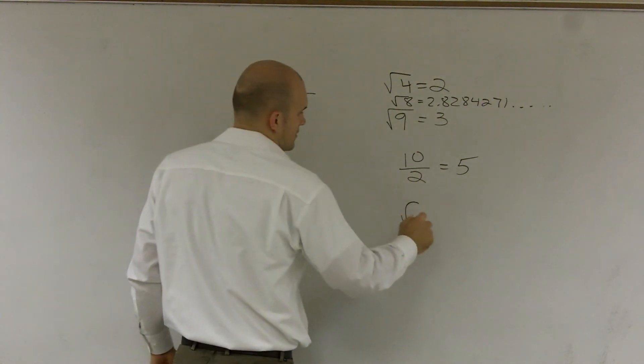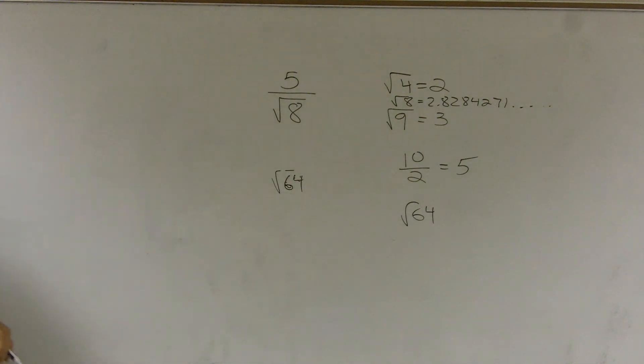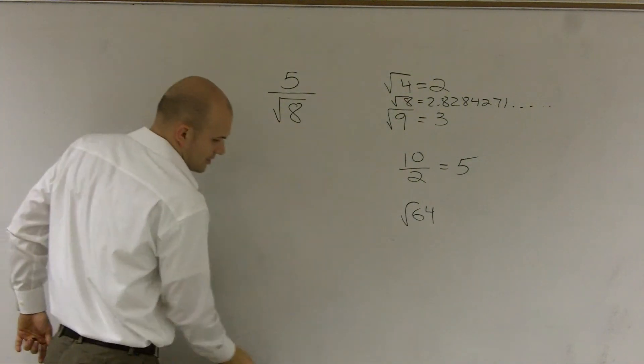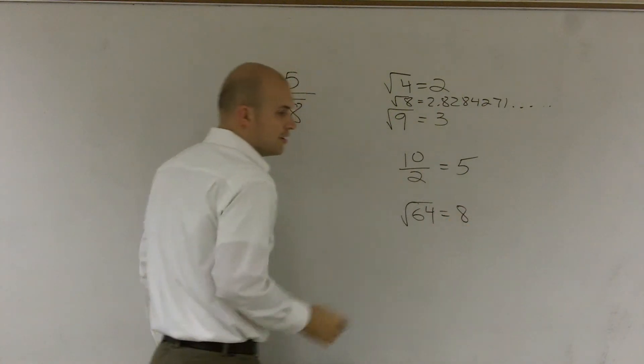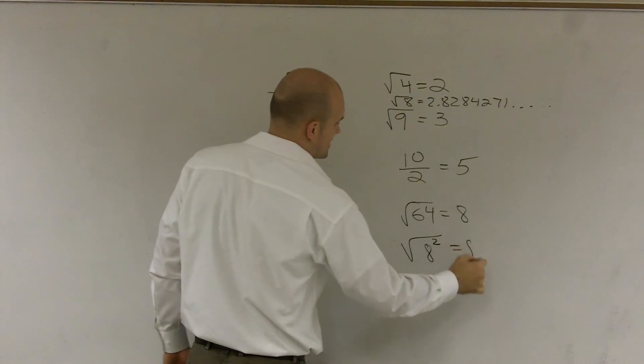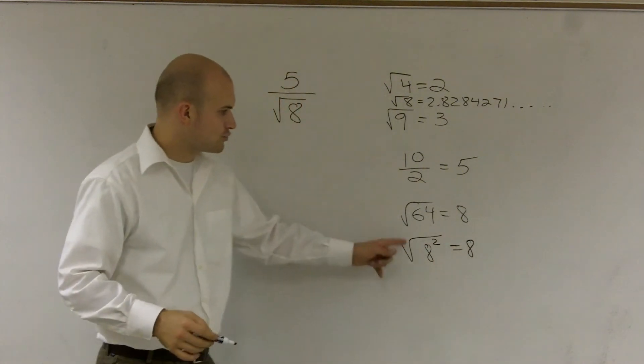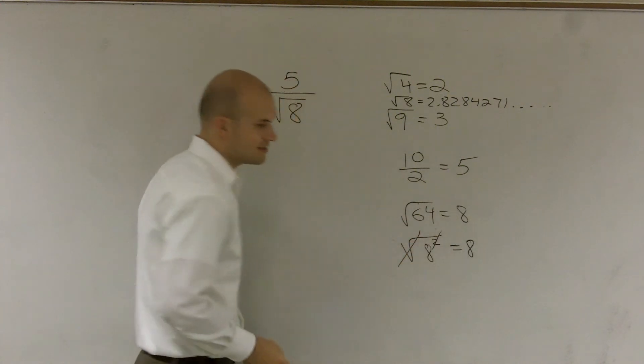Square root of 64, we understand, is 8, right? Well, I can rewrite the square root of 64 as the square root of 8 squared equals 8. And what you'll notice is the square root and the squaring cancel out. So I'm just left with 8 is equal to 8.